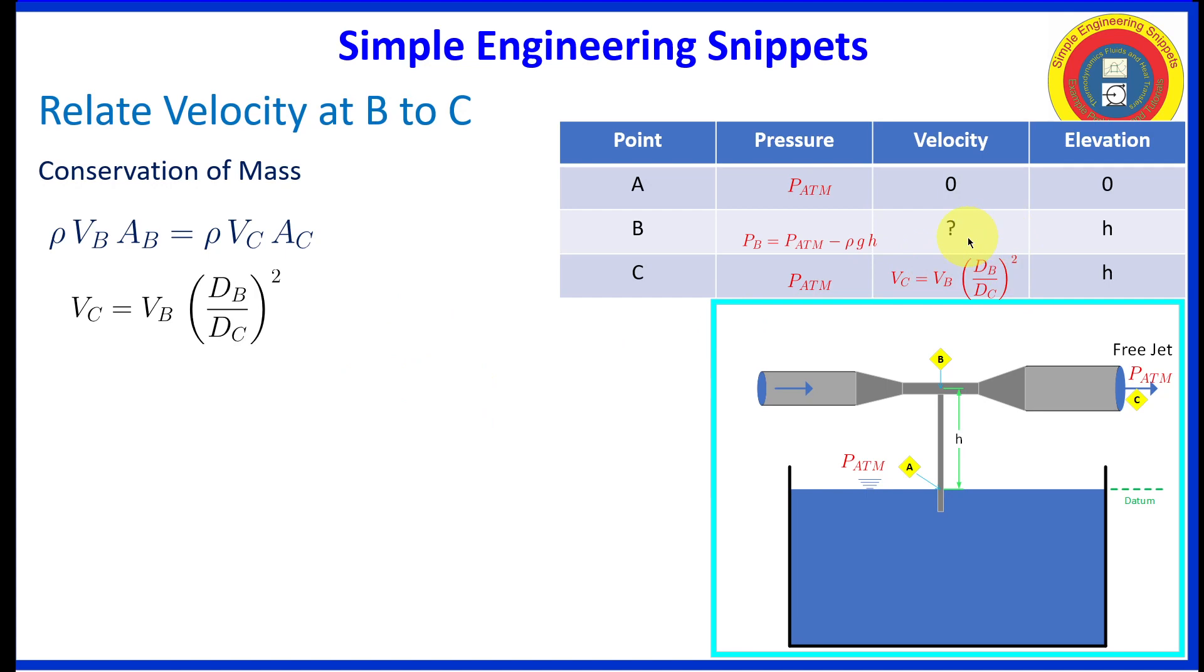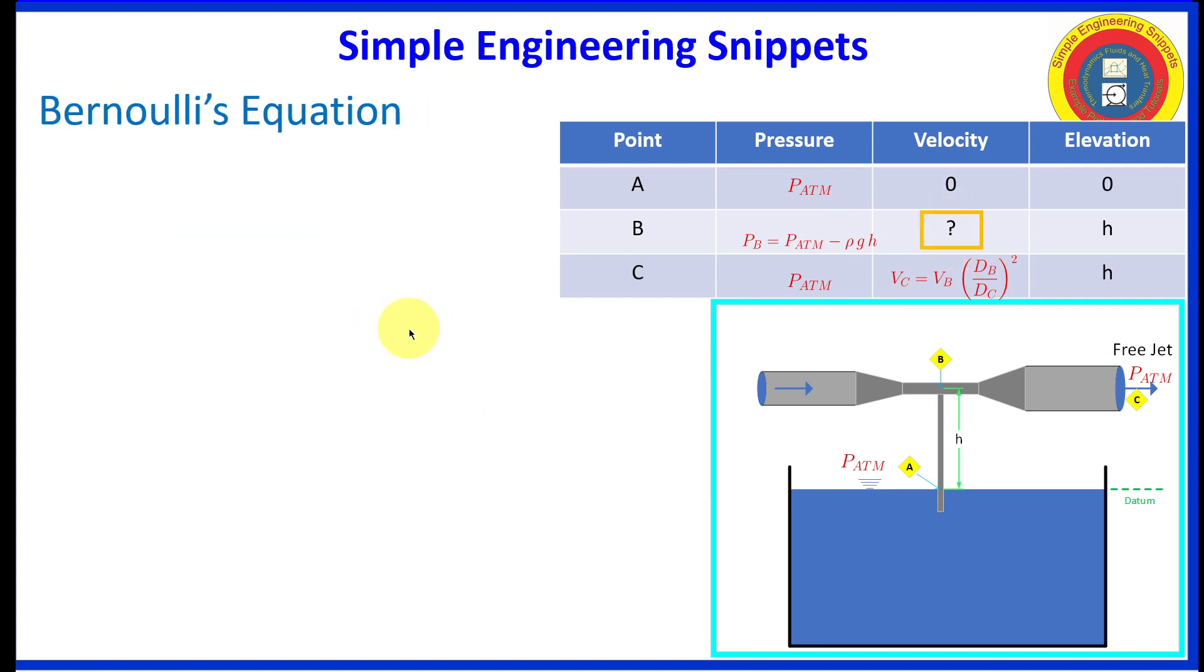Now we have one unknown. Right now we have no equations to solve that. But we can use Bernoulli's equation. But when you use Bernoulli's equation, clearly you want to bring in the unknown, so we want to go from point to point, one of the points being Bravo. And since we know all the information on alpha, it's very tempting to go alpha to Bravo. However, that would be incorrect. To see why that is incorrect, let's review the restrictions on Bernoulli's equation.